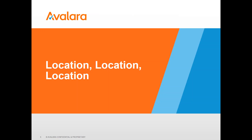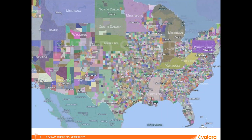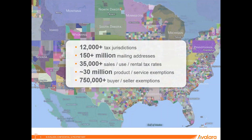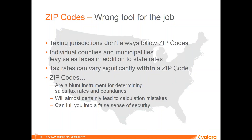So let's talk about location — why is it important when it comes to sales tax? I've got this great quilt map showing all the different taxing jurisdictions across the United States. There are over 12,000 tax jurisdictions in the United States, which is a very astounding number. There are 150 million mailing addresses, and they're obviously in different taxing jurisdictions. On top of that, you have product taxation — around 30 million products that we have to consider how they're taxed within these jurisdictions. And you have 750,000-plus buyer and seller exemptions to manage. What people most commonly use in their ERP system or NAV would be zip codes, and I want to talk about why zip codes are the wrong tool for the job.